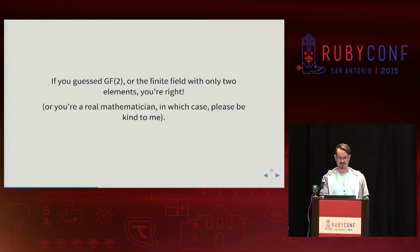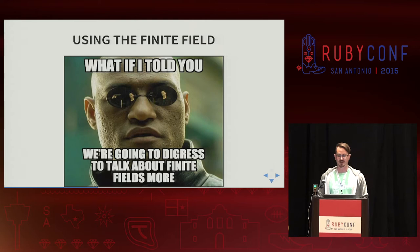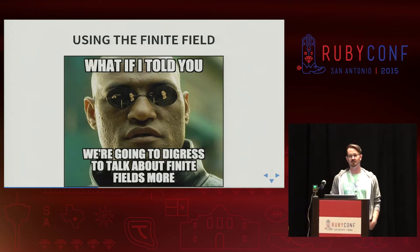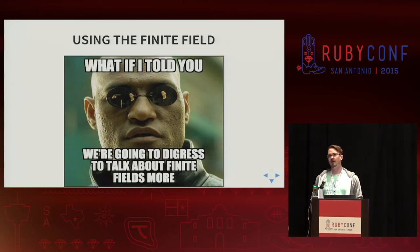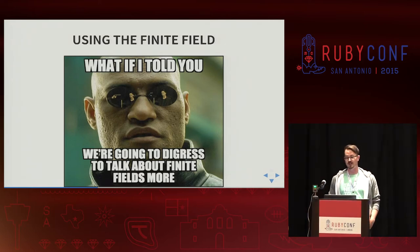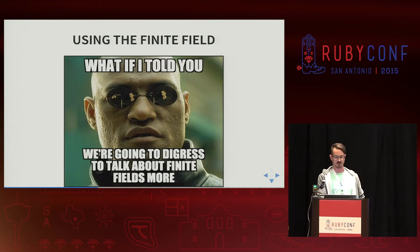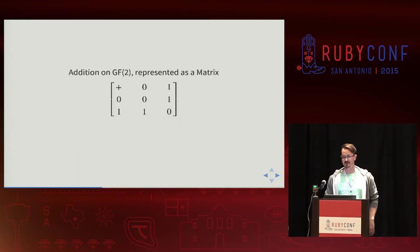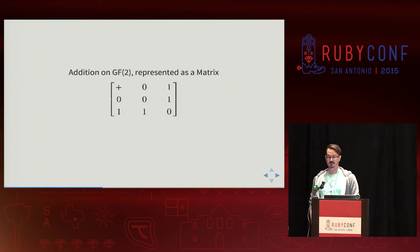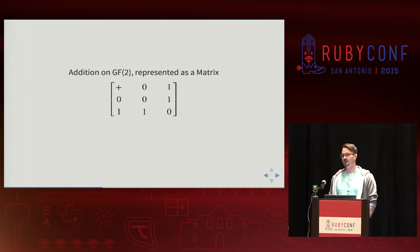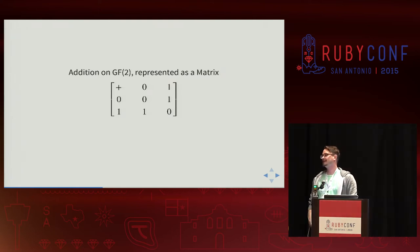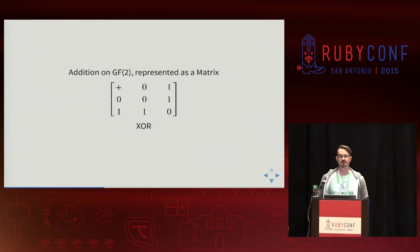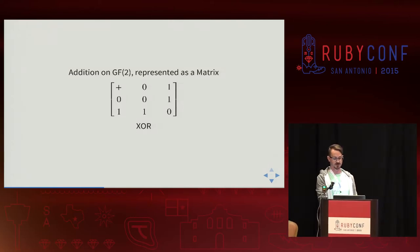Let's talk about using the finite field and its interesting properties. This is addition on Galois field two as represented by a matrix, and this actually has a specific Boolean property — exclusive OR. So you can flip bits when you are reduced to two elements in your field.